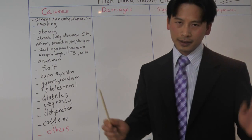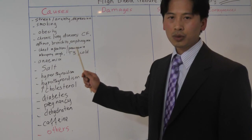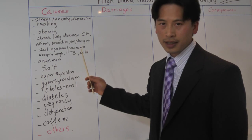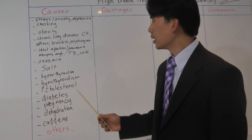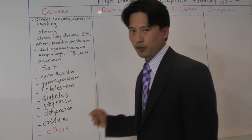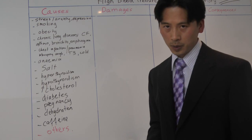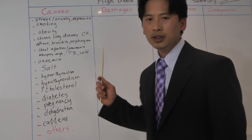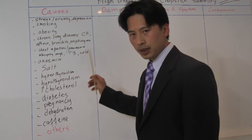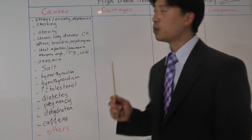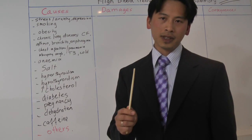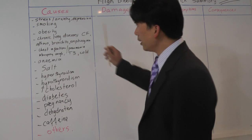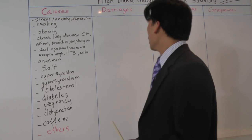But it means nothing if you don't know how they cause your high blood pressure. So how does stress and anxiety cause high blood pressure? How does smoking cause high blood pressure? How does being overweight or obese cause high blood pressure? Unless you know why, nothing is going to stick in your head. You need to know why or how these causes lead to high blood pressure in order to treat it effectively. Next, I will go into more details on how each of these causes leads to high blood pressure.